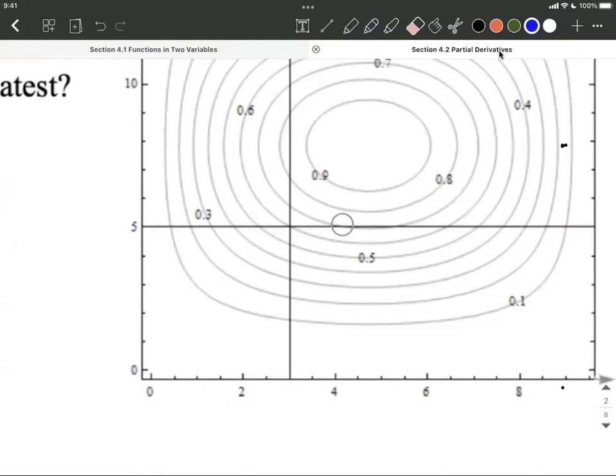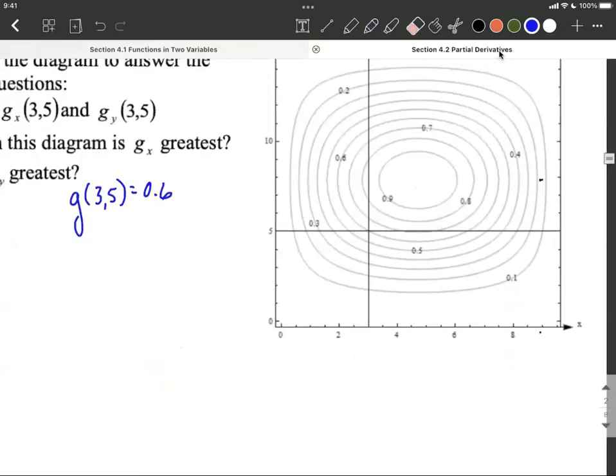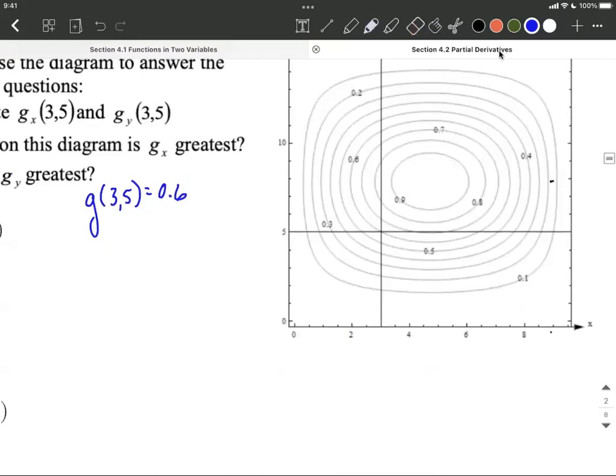Now that corresponds with 0.7. If I go all the way around here, you can see that it's labeled 0.7 up here at the top. And that corresponds with an x value, let's say that's right around 4.2. So we can say g of 4.2 comma 5 is a z value of 0.7.